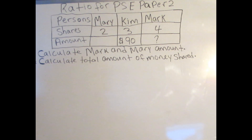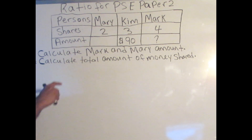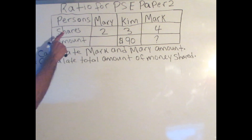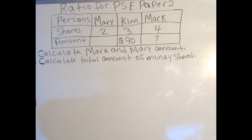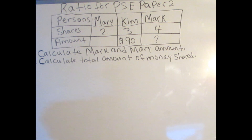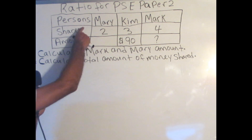Once again, welcome back students. As you can see on the board, we're working a problem that has to do with ratio for math PEC paper 2. And there's a chart that they gave us to find A and B. The chart has some important information that we'll use in order for us to find what we don't know.